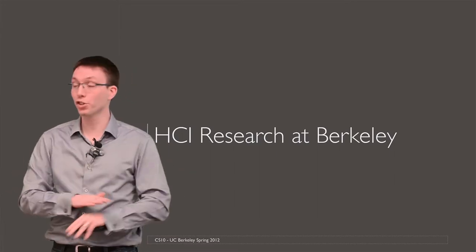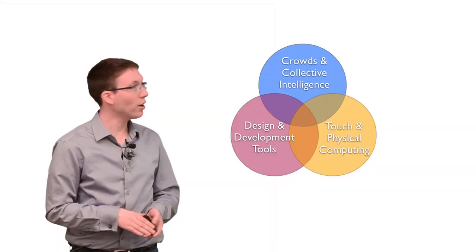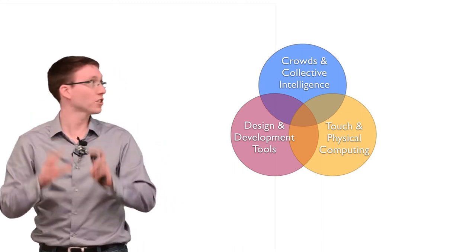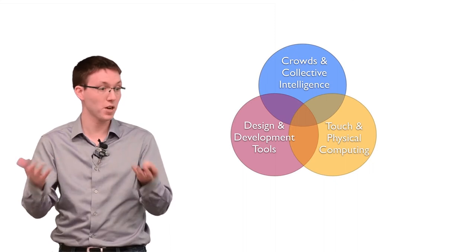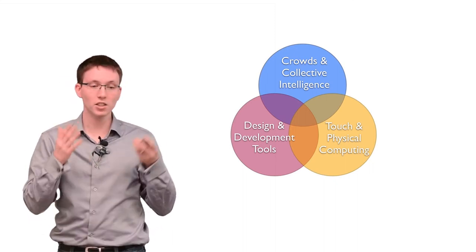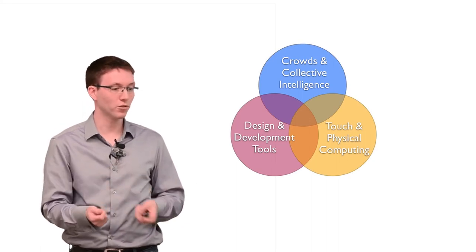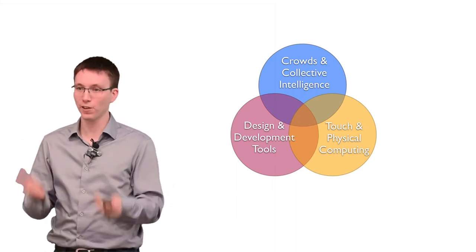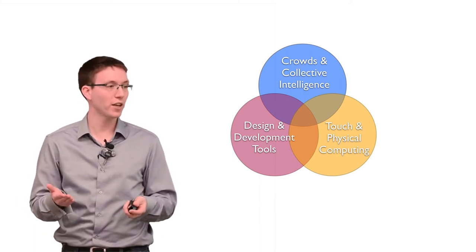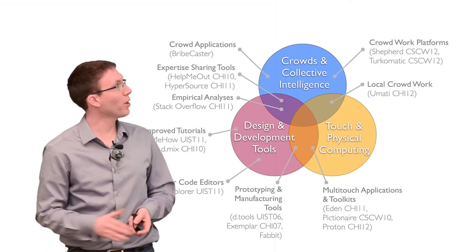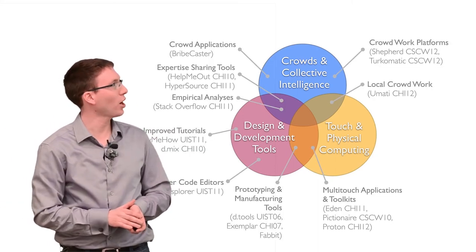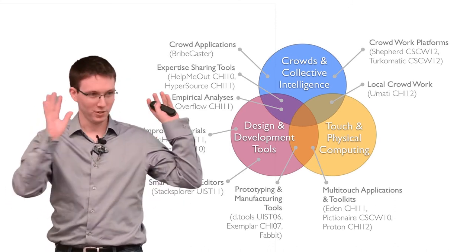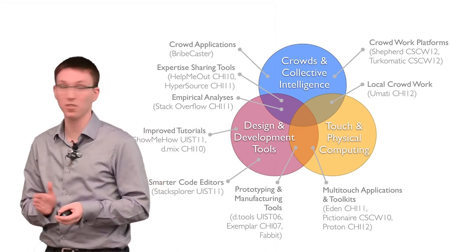That is research in HCI at large. Now let me tell you about a couple of research projects happening here at Berkeley. My own research group works at the intersection of three subfields: crowdsourcing and collective intelligence; design and development tools — new environments for designers and programmers; and new types of user interfaces such as touch-based interfaces and physical computing, which describes any interface that uses sensing and actuation. We have a large number of projects across these areas.